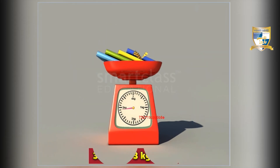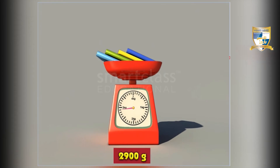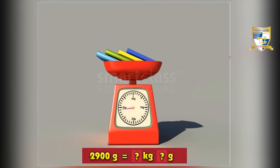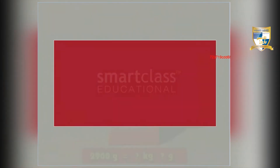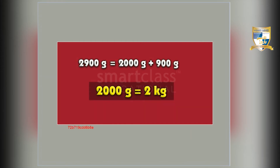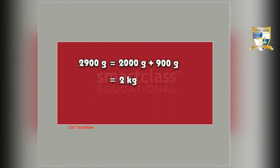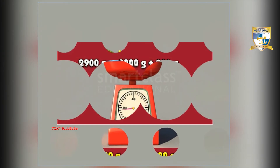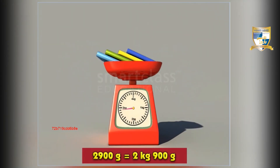Let us try another one. The mass of these books is 2900 grams. What is its mass in kilograms and grams? First, split 2900 grams into 2000 grams and 900 grams. 2000 grams equals 2 kg. So you get 2 kg plus 900 grams, which is 2 kg 900 grams. Thus the mass of the books in kilograms and grams is 2 kg 900 grams.